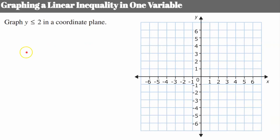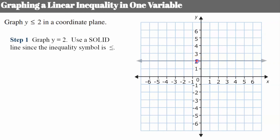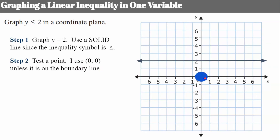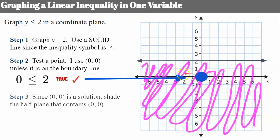Let's review graphing in general. First, ignore the inequality symbol and just graph it as if it were a line. Since it can be equal to, it's a solid line. This gives us a horizontal line passing through the y-axis at 2. Now test a point — I always use the origin if it's not on the boundary line. Plug in (0, 0): 0 is less than or equal to 2, which is true. So the origin is part of the solution area; shade everything below the boundary line. This half plane represents your solution area — you must show both the shaded portion and the boundary line.